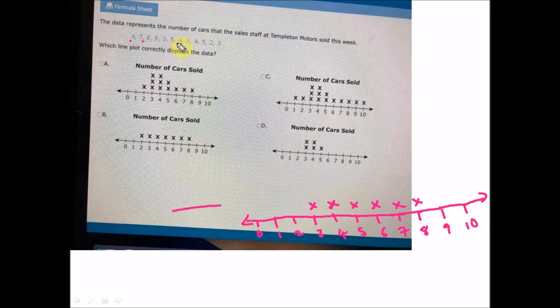The sixth sales staff sold five, we have it here. The seventh sold four, so we have another sales staff that sold four, put another star here on the four. The eighth sold three, we have another one that sold three, so we'll put it here.